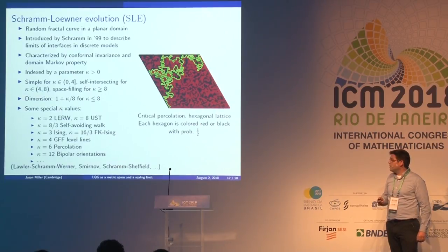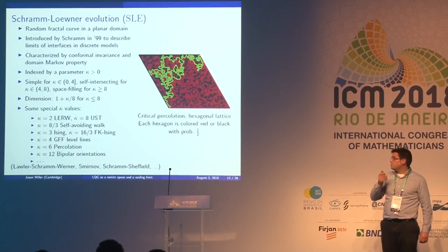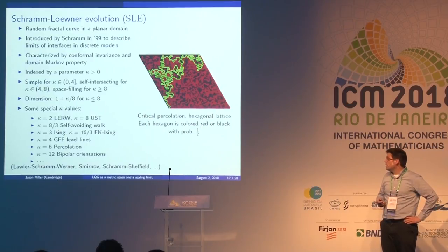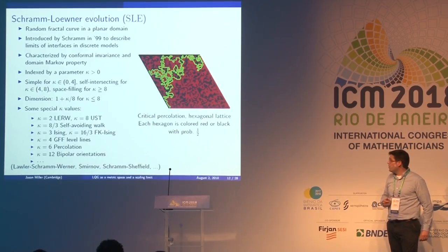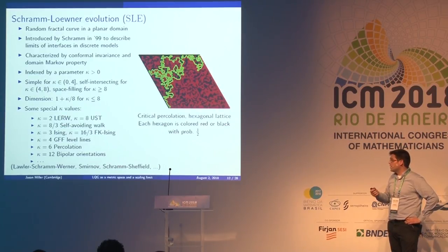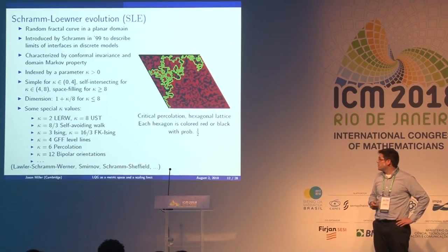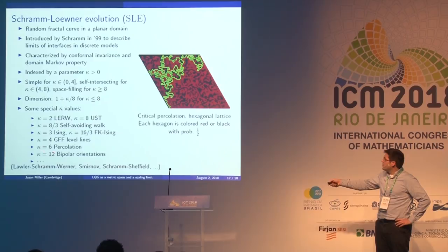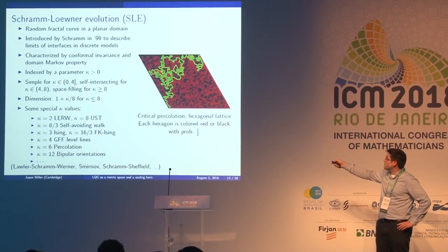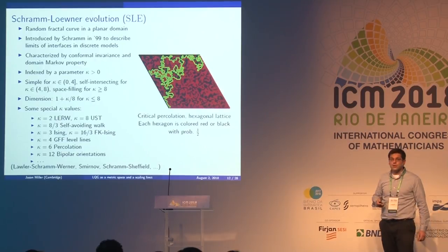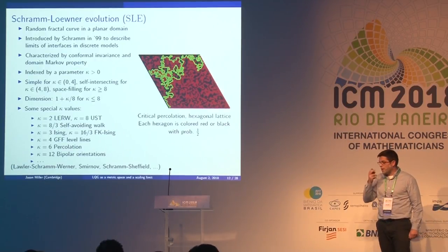Special values of kappa correspond to different discrete models: loop-erased random walk, uniform spanning tree, self-avoiding walk, Ising model, and others. The value most important here is kappa = 6, which Smirnov proved corresponds to the scaling limit of the percolation interface.